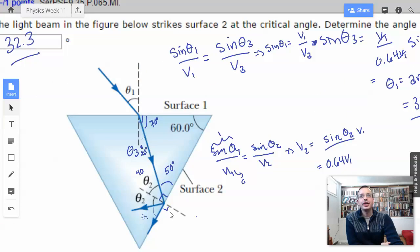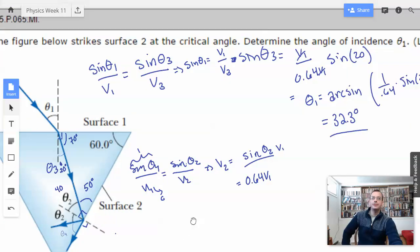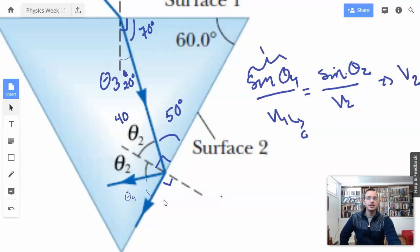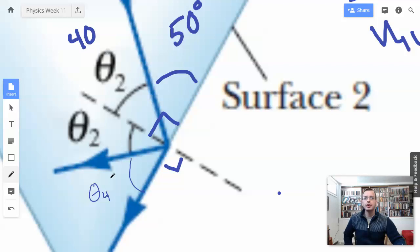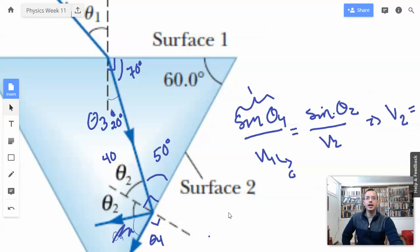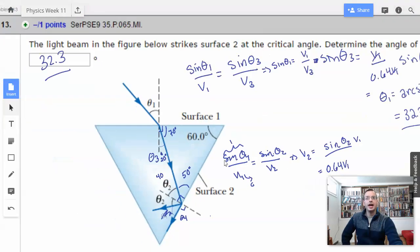To backtrack real quick on how we did this problem. It told us critical angle, or as I like to say now, the fatal angle. This right here is theta 4. Theta 4 is 90 degrees, which means the sine of 90 degrees is going to be 1. We used Snell's Law to find, we were given theta 2, we were given theta 4, and we assume that outside the surface, it's air. So we're going to use the speed of light as actually the speed of light.